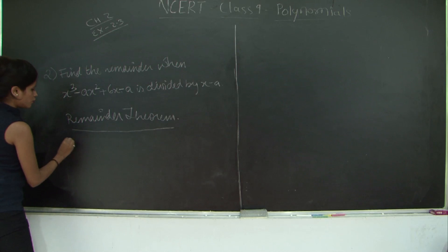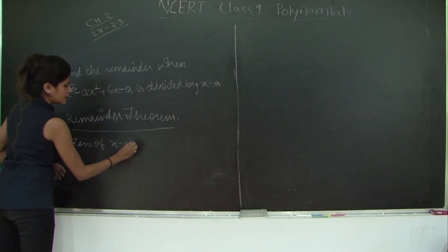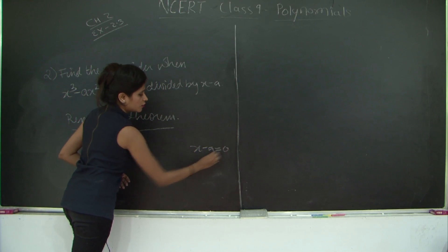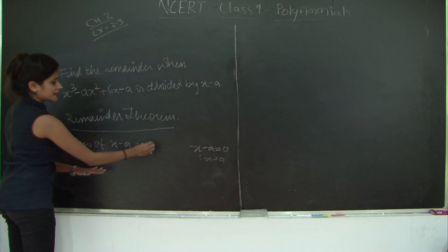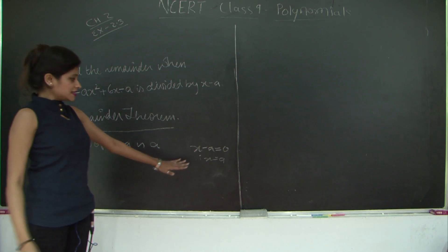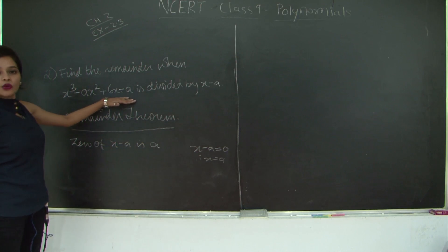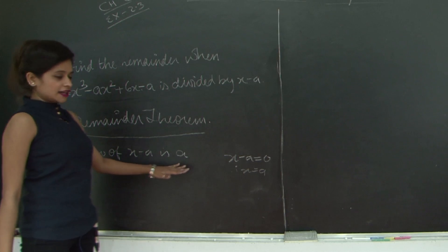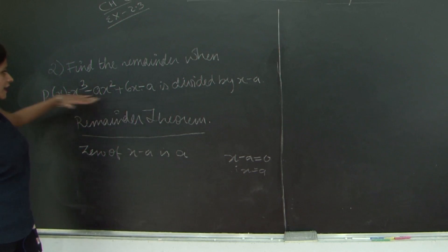Okay, now the zero of x-a is, let's find it out, x-a is equal to 0, therefore x is equal to a. So zero of x-a is a. Now substituting the value of x is equal to a in this polynomial will give you the remainder. So let's say I am naming this polynomial as p(x). So zero of x-a is a. I am going to substitute the value of a in this polynomial.